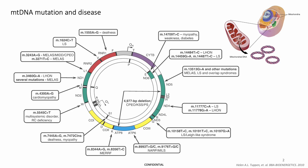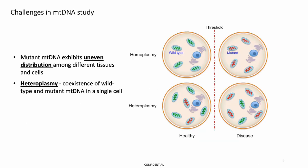Each cell may pack thousands of mtDNA. Mutant mtDNA are unevenly distributed among tissues and cells. The coexistence of wild-type and mutant mtDNA in one cell is called heteroplasmy. Such heterogeneity is an important feature of mitochondrial disease and also makes studying mtDNA very challenging.